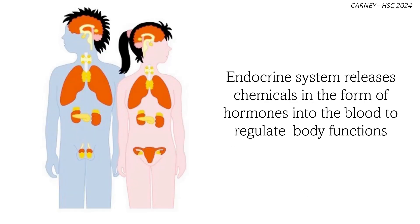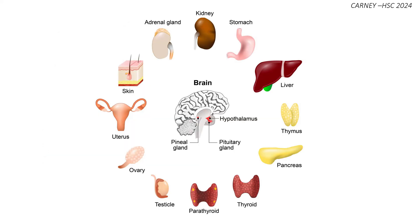The endocrine system, along with the nervous system, regulates the activity of the body. Its main components are hormones which are chemical messengers within the body. The pituitary gland is known as the master gland and is involved in secreting a number of hormones that can affect many organs, such as reproductive organs, the thyroid, and the adrenal glands. For example, it will secrete a hormone called ADH that targets the kidneys to help regulate water in the body.